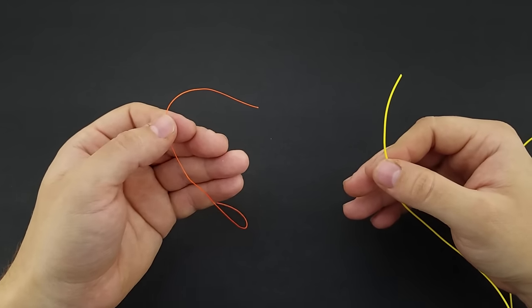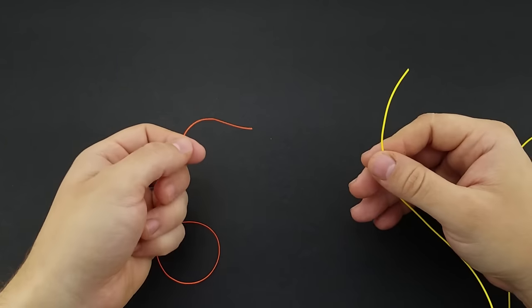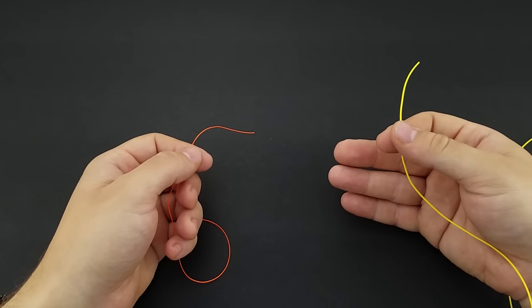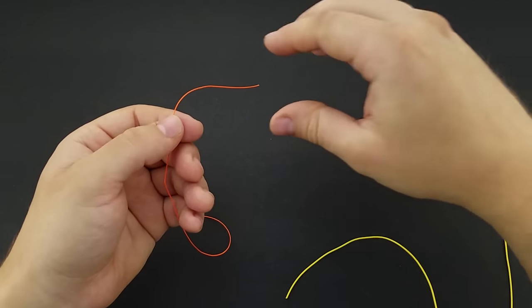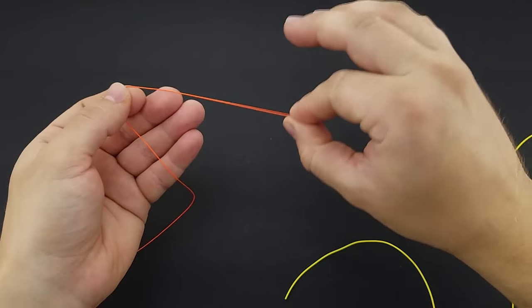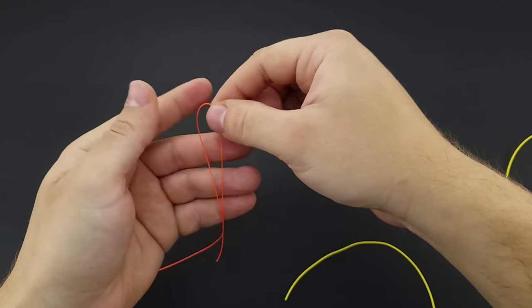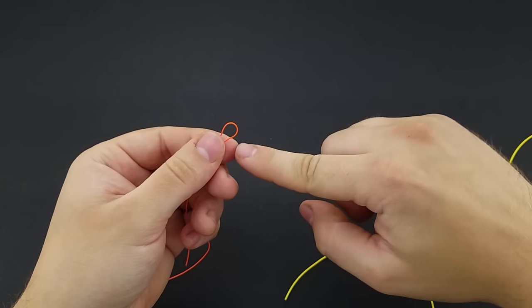Now with your line, you're going to have your main line—in this case my orange line—and my leader line, my yellow line. So with your main line, you're going to start by doubling that over about six inches here and create a loop on the other end.